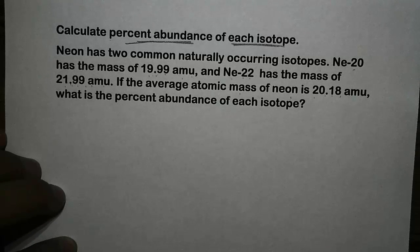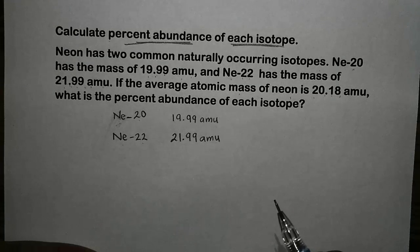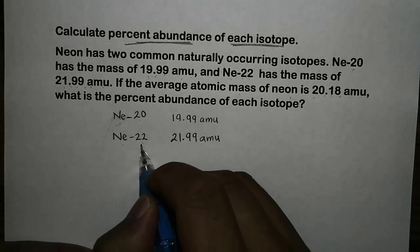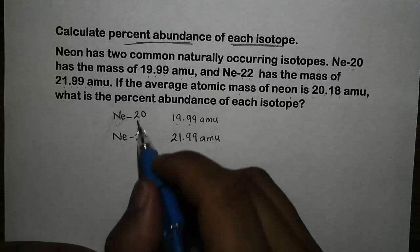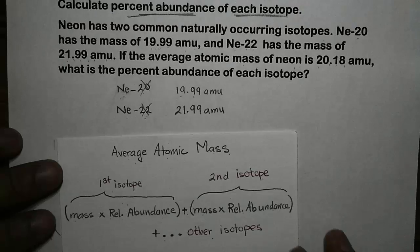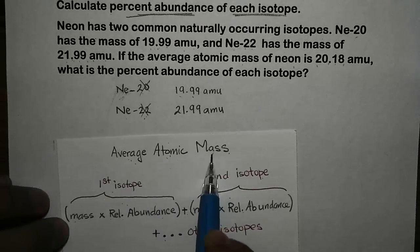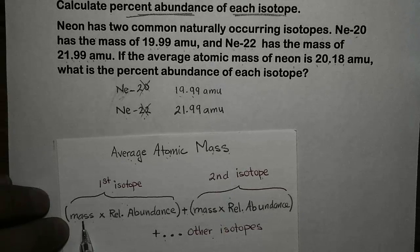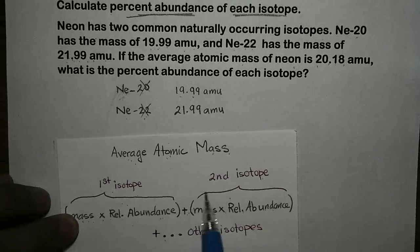First of all, we need to realize that there are only two isotopes here: neon-20 and neon-22. The numbers 20 and 22 are the mass numbers, but in this case we have the exact mass of each isotope, so we can ignore the 20 and the 22. Before we continue, we have to know that the average atomic mass is calculated based on this equation: the mass of the first isotope times its relative abundance, plus the mass of the second isotope times that isotope's relative abundance, and so on. In this case we only have two isotopes.